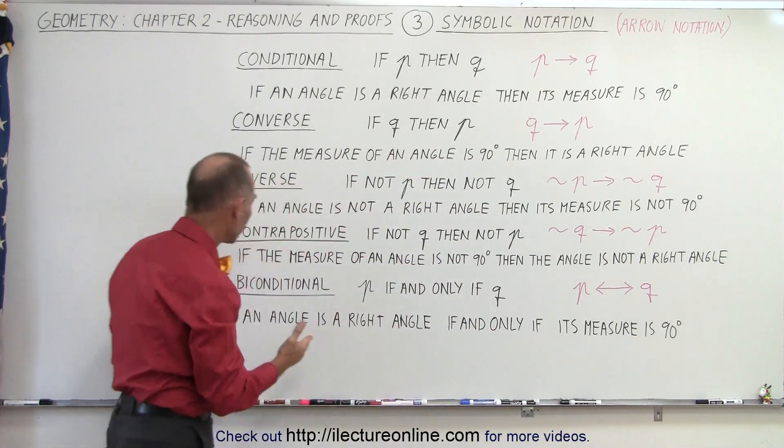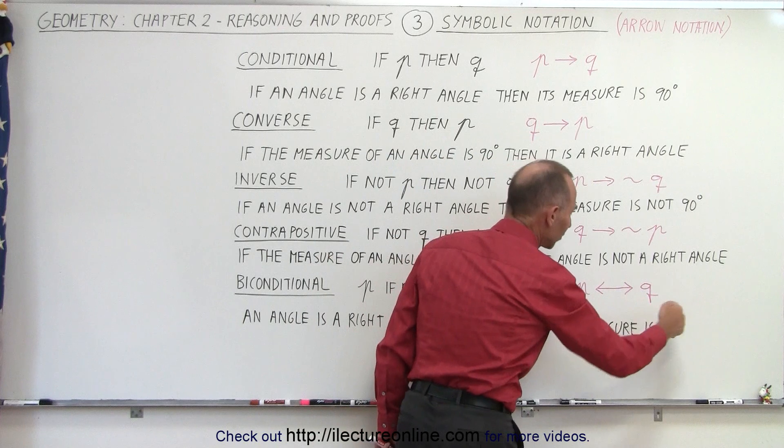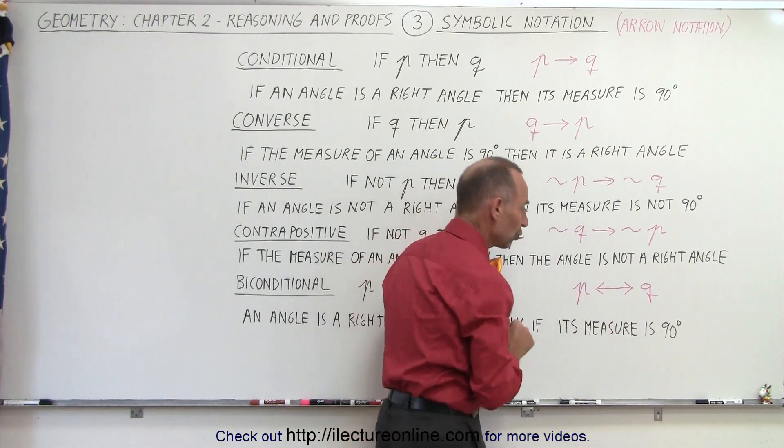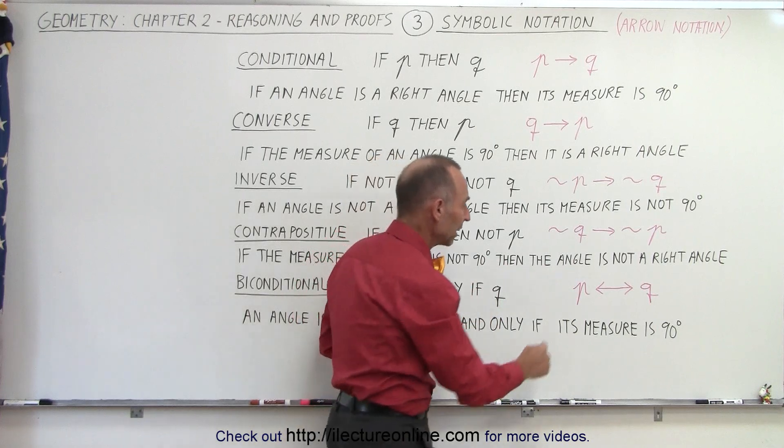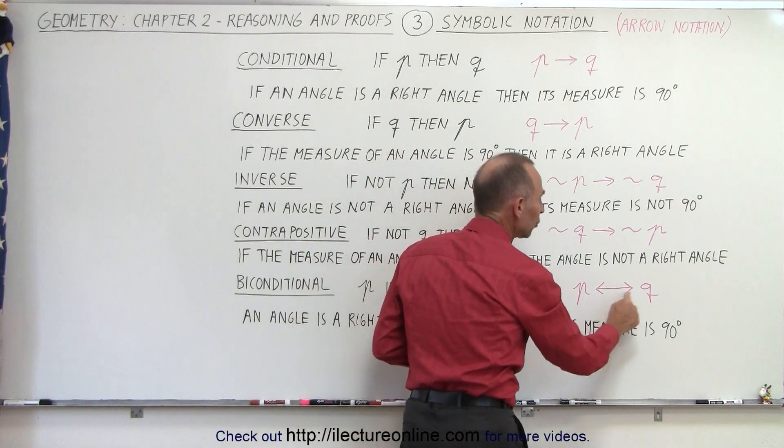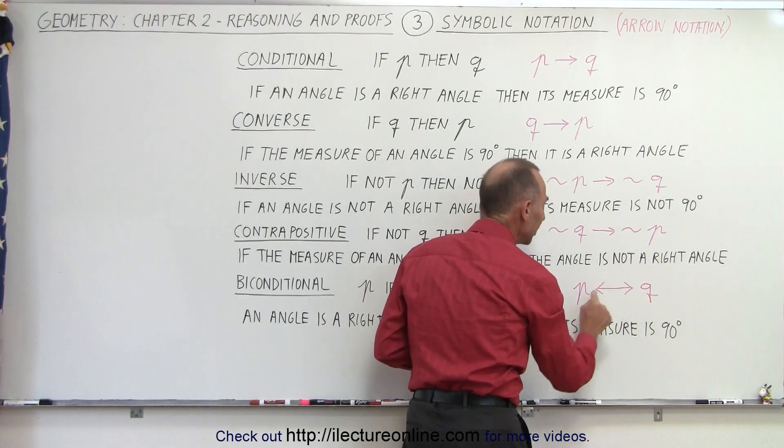And finally the symbolism used for biconditional means that it has to be in both directions. That means for this to be true it must be true from left to right and from right to left. If P is true then Q is true and if Q is true then P is true.